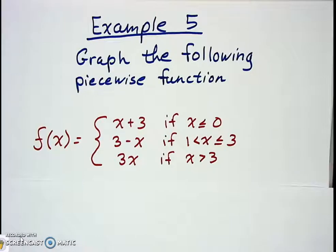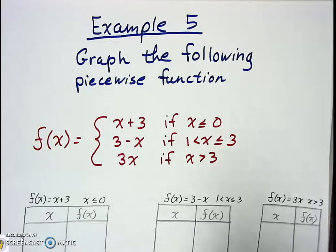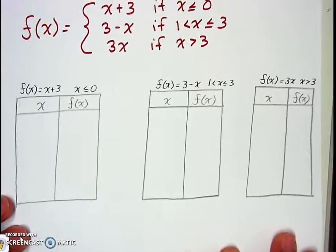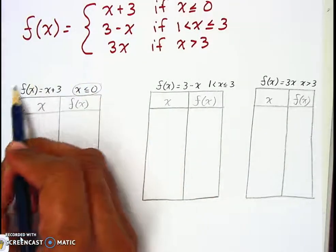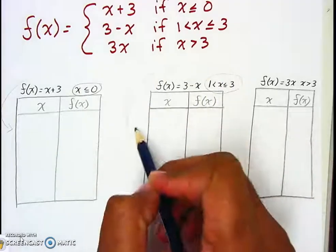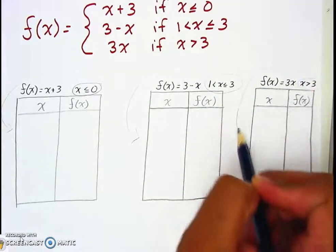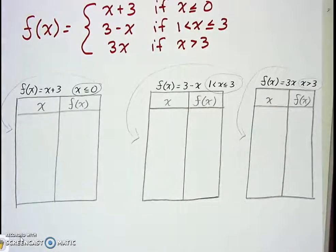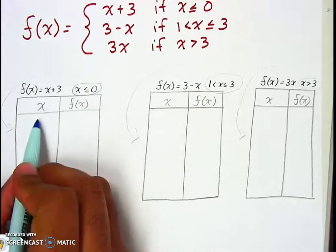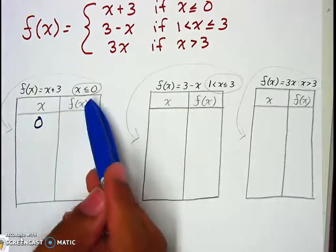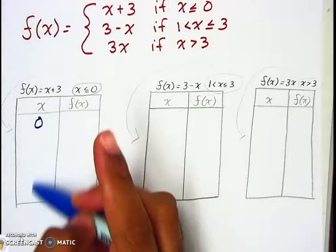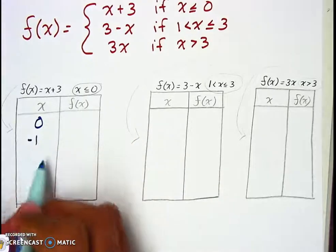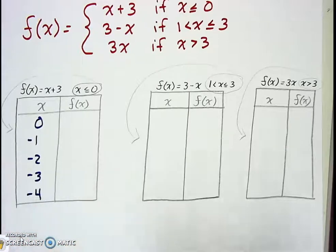Because there are three equations, there are three tables. Each table uses our X values. We start with the endpoint — for this first piece the endpoint is zero — and because it goes on forever to negative infinity, we need at least four or five numbers: zero, negative one, negative two, negative three, negative four.